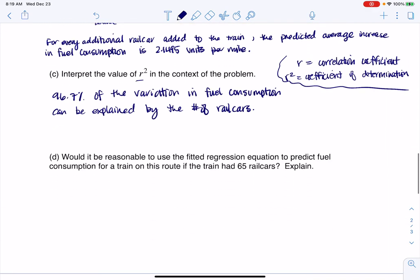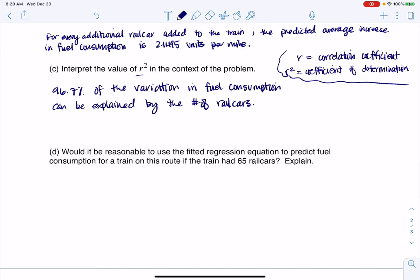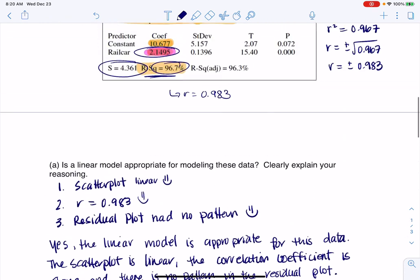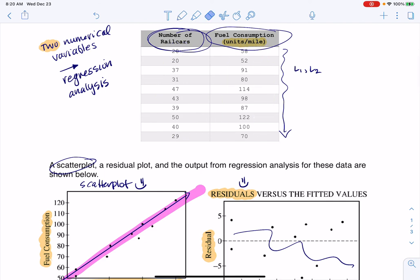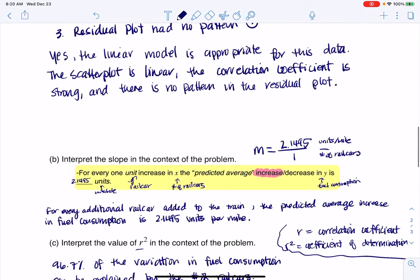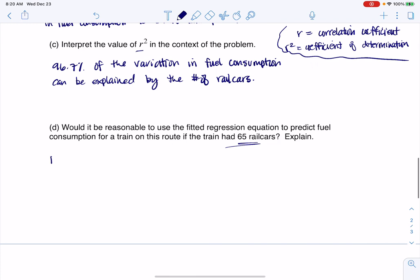Okay, last one. If I scroll back down, it says, would it be reasonable to use your fitted regression equation to predict fuel consumption for a train on this route if it had 65 cars? Well, let's go ahead and take a look at our data and see how we're doing with that. So if I take a look at my data, and I'm going to erase some of my scribbles here so we can see stuff. If I look at my data on the X in terms of the railcars, to me, it looks like the lowest number of railcars I had in my sample was 20, and the highest was 50. And they're asking me to predict for 65 railcars. So we need to be careful, because we're extrapolating pretty far outside of our initial data range, and that can get really dicey. So would it be reasonable? I would say no. All right? No.